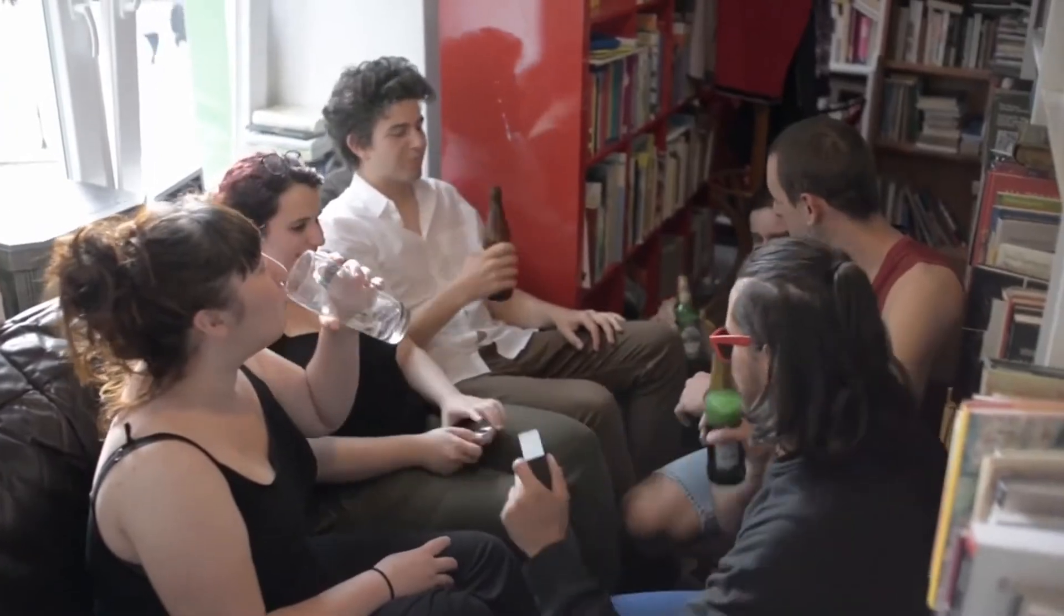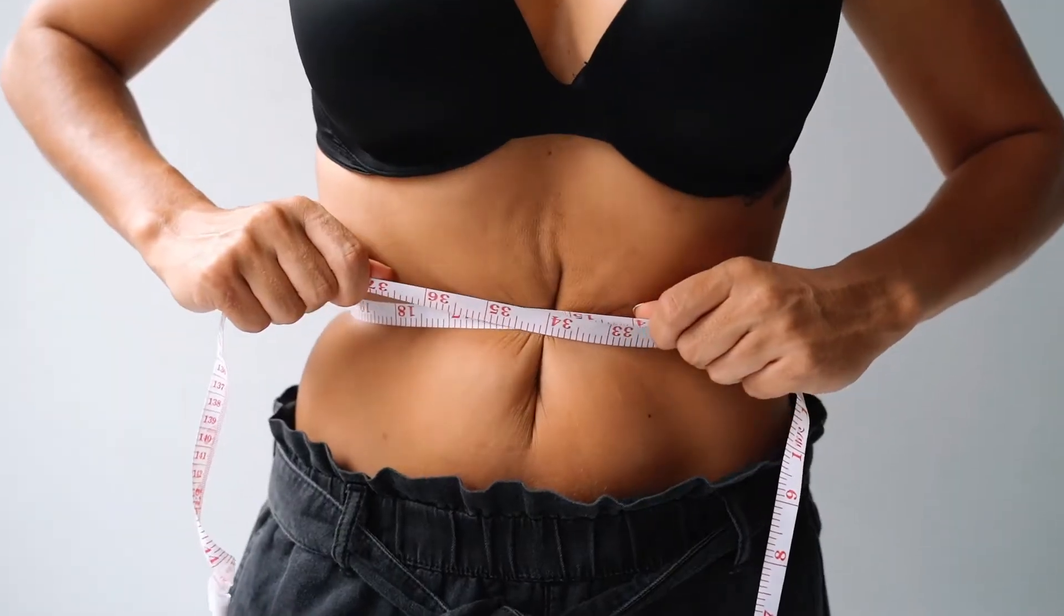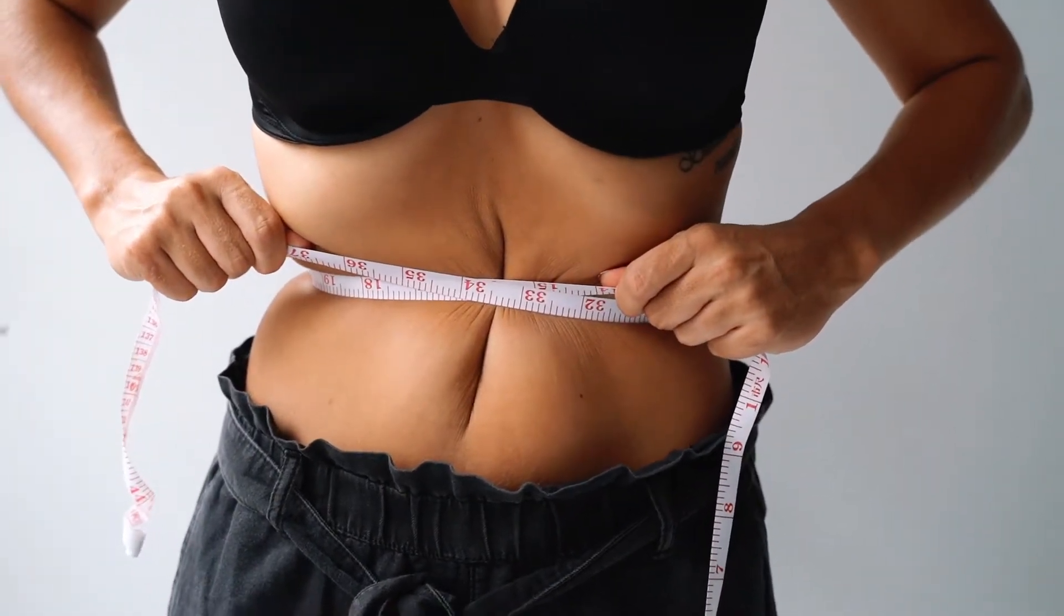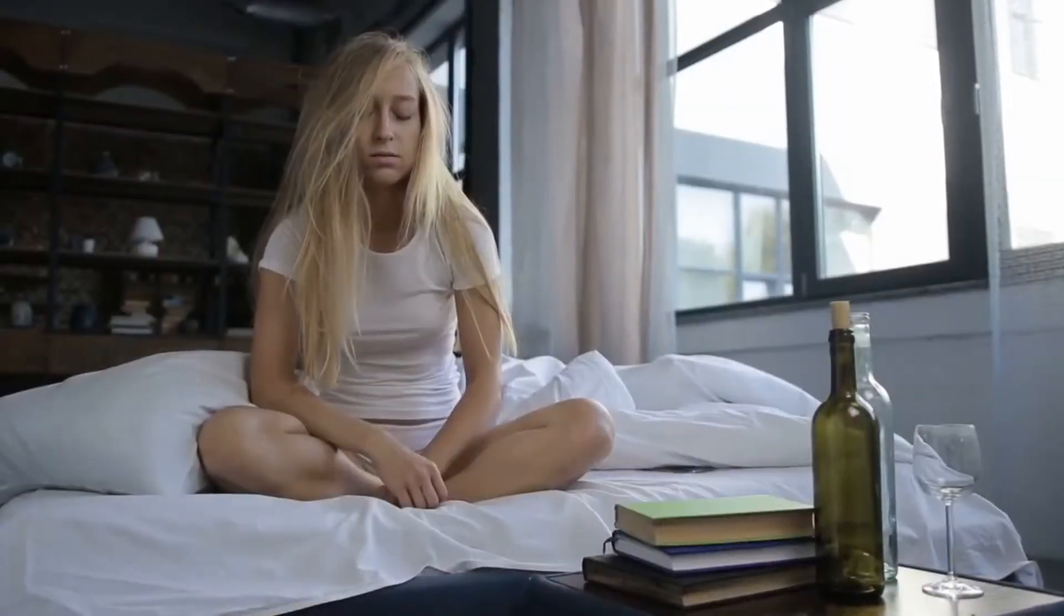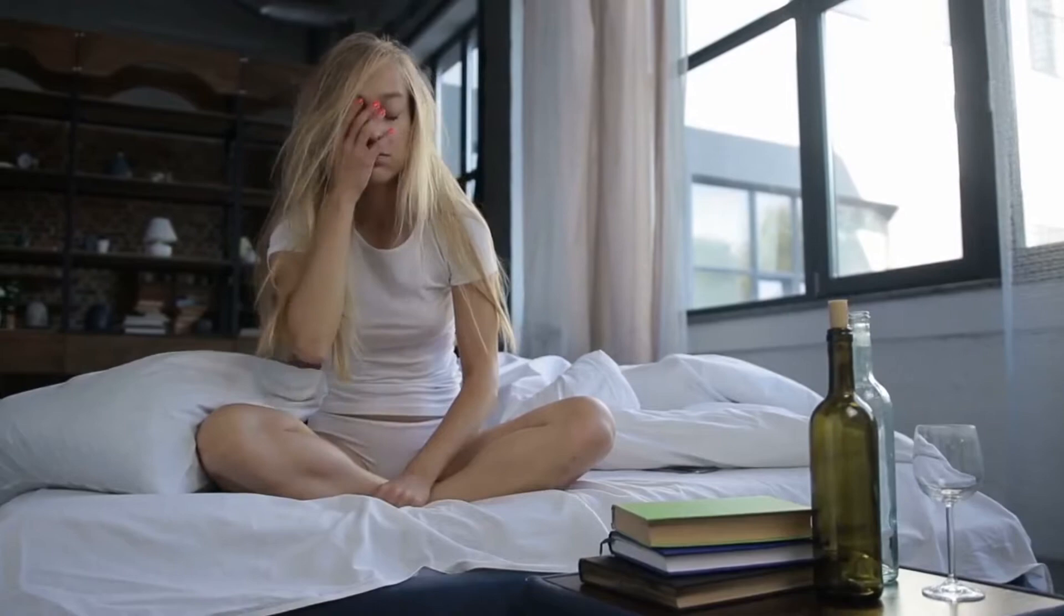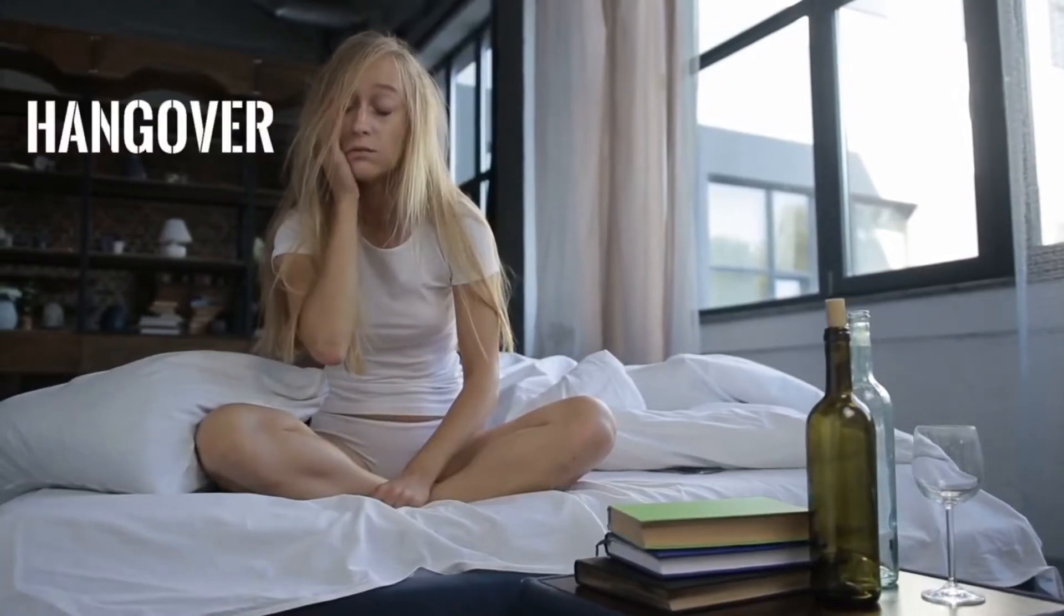To make matters worse, this atrophy is often accompanied by a reduction in muscle mass, weight gain, reduced hair growth, and signs of premature aging. There's simply no way around it. Alcohol is a potent testicular toxin.